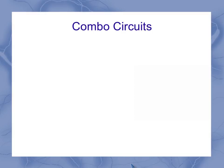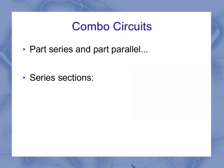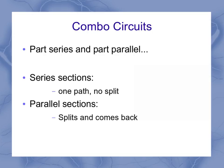So in combo circuits, we're going to have part series and part parallel. In the series section, there's one path with no splits. For the parallel section, it splits and comes back together. We could also think of this in terms of each side before it splits having the same high side potential, and then when it comes back together, having the same low side potential for both paths.